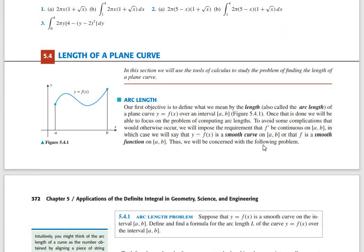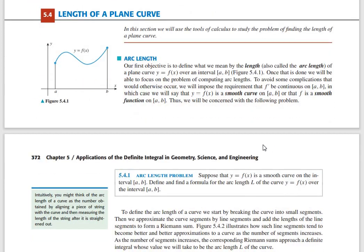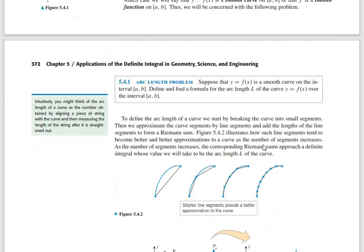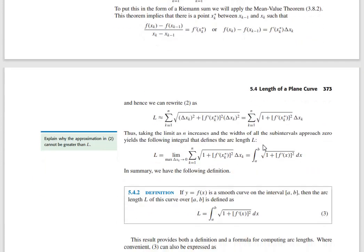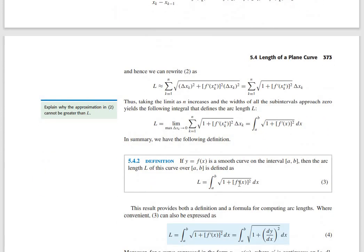We'll find the length of the plane curve. The formula for the length of the plane curve is the integral from a to b of the square root of 1 plus [f'(x)]² dx. That is the length of the plane curve.